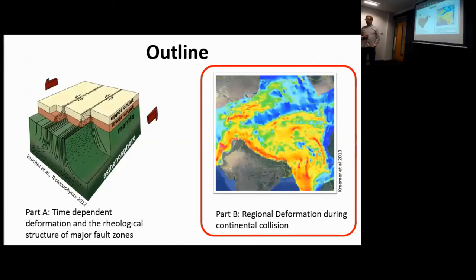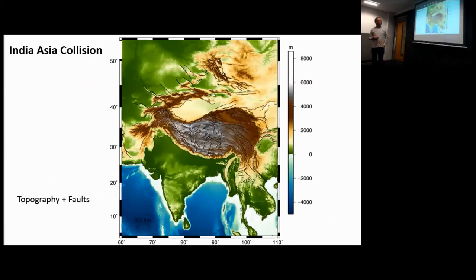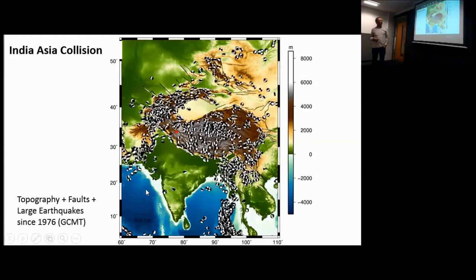Part B: I want to zoom out and think about continental-scale deformation, focusing on the India-Asia collision — one of the most well-known collision zones on the planet, the biggest deforming area on Earth. India is moving north, colliding with the Asian continent, creating earthquakes over a huge distance range. This is the classic location for continental tectonics — any model of continental tectonics needs to be able to explain what's going on here.